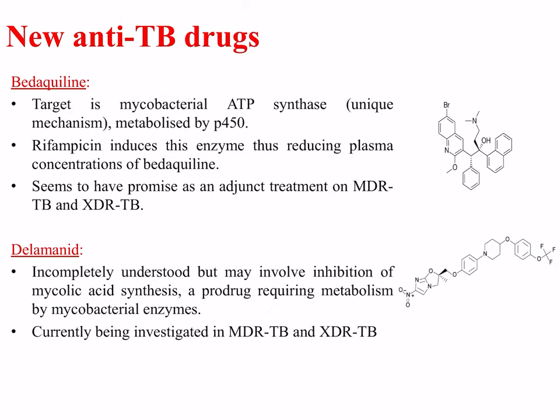Finally, there have been some novel drugs developed in recent years, including bedaquiline and delamanid. The target for bedaquiline is mycobacterial ATP synthase, involving a unique mechanism; it is metabolized by P450 enzymes, and rifampicin induces this enzyme, thus reducing plasma concentrations of bedaquiline. It shows promise in adjunct therapy for multi-drug resistant and extensive drug-resistant tuberculosis. The mechanism of delamanid is incompletely understood but may involve inhibition of mycolic acid synthesis; it is a pro-drug requiring metabolism by mycobacterial enzymes and is currently being investigated in multi-drug resistant and extensive drug-resistant TB.